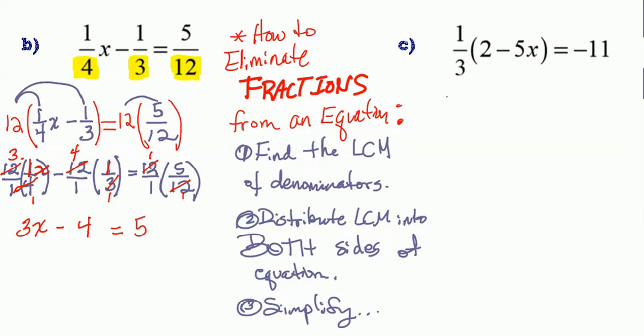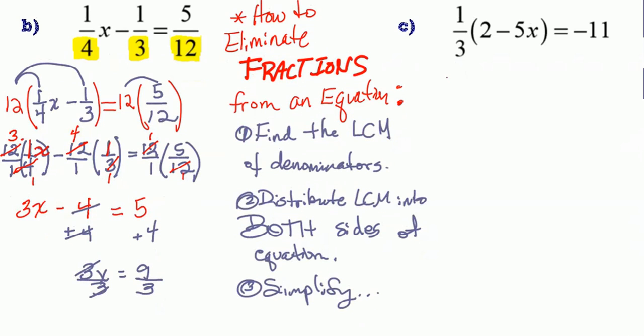So now we can just go for it and solve for x. Of course, what will I do here? I'll add 4 to both sides. Cancels. 3x is equal to 9. And then just divide by 3, right? 3's cancel. And now x is equal to... Good job, you guys. Let's go for the next one.